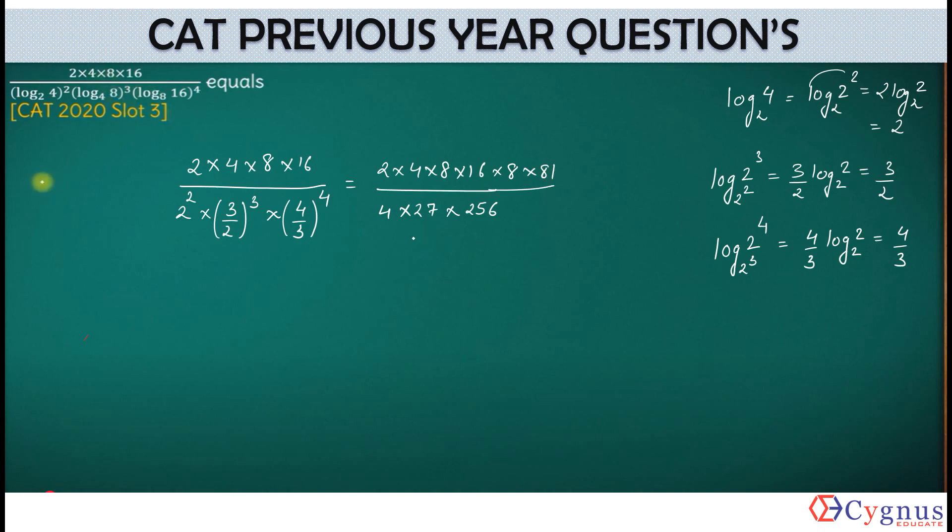Let's look at this. 27 into 3 will give you 81. Now look at this 4. 4, 4 will be cancelled out. What was this 256? Think about that. It was 2 to the power 8.